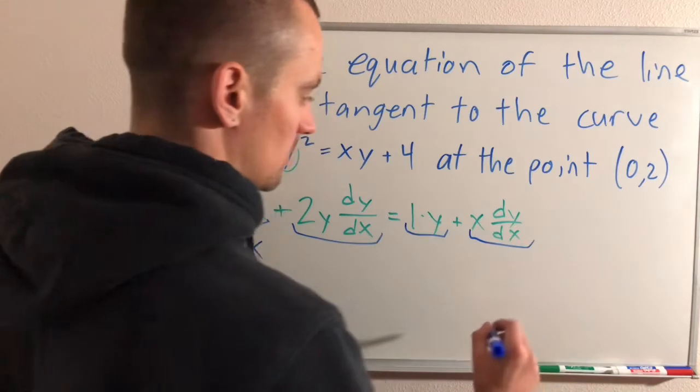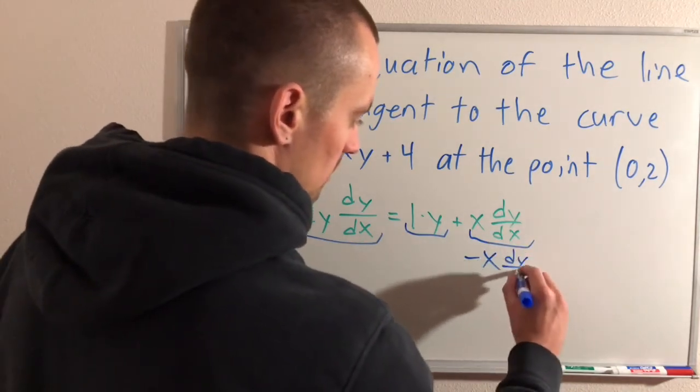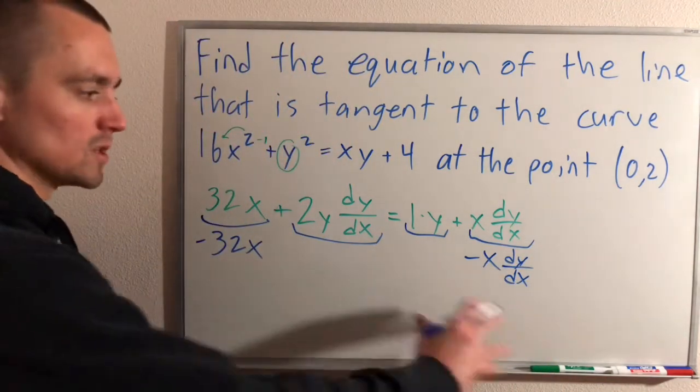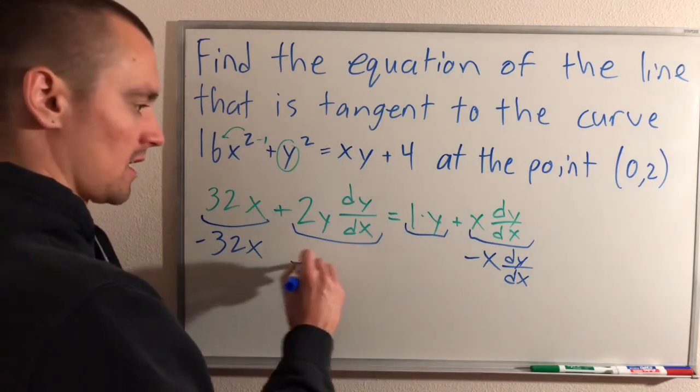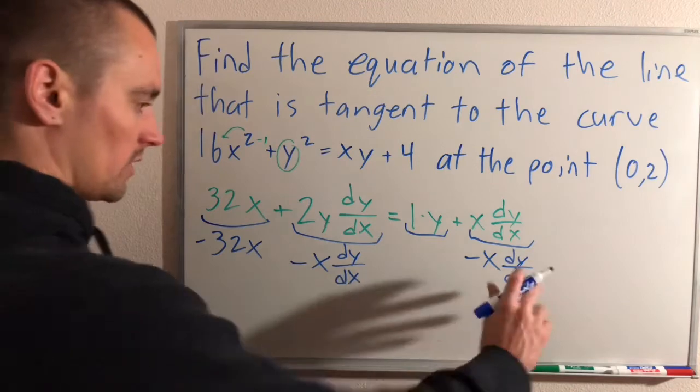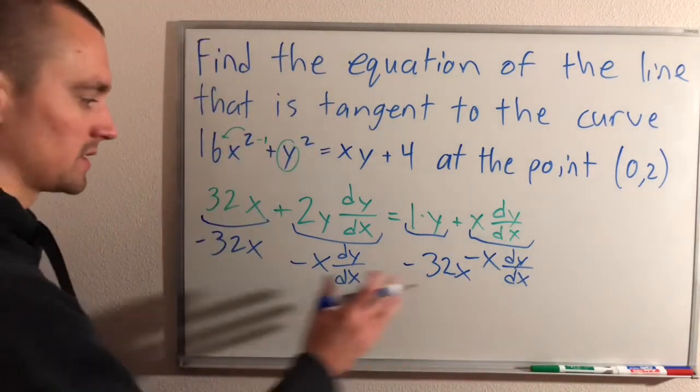And then this term has a dy/dx, so we need to move it over to the left side of our equation. And then remember, whatever you do to one side, you have to do to the other side of the equation as well. So over here, we're going to have to minus an x dy/dx. And then over here, we're going to have to minus a 32x also. So we're doing that to both sides of the equation.